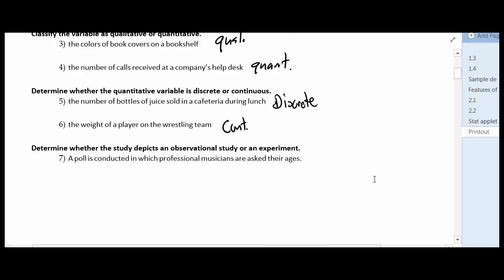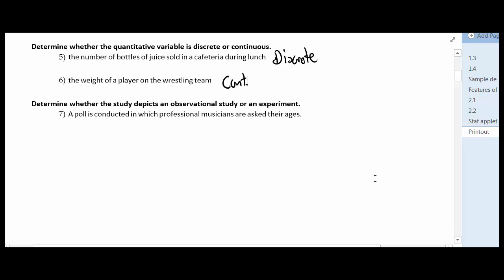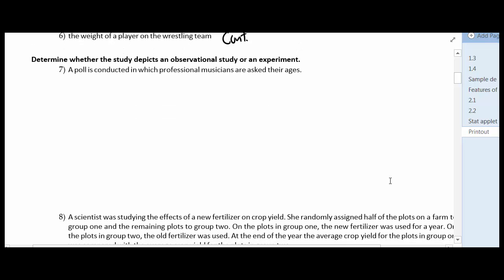Number seven, determine whether the study depicts an observational or experimental. A poll is conducted in which professional musicians are asked their ages. There's no experiment being performed here. No one's having a treatment applied. They're just saying, how old are you? So this would be an observational study.